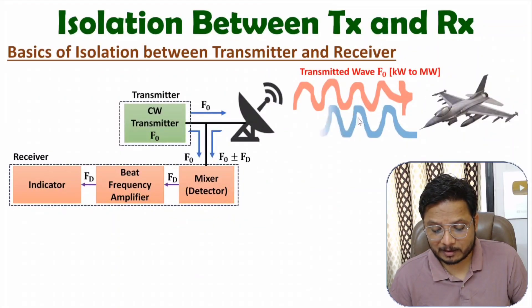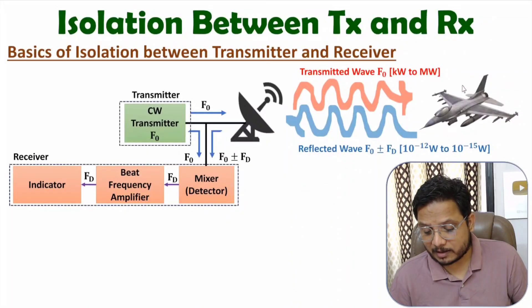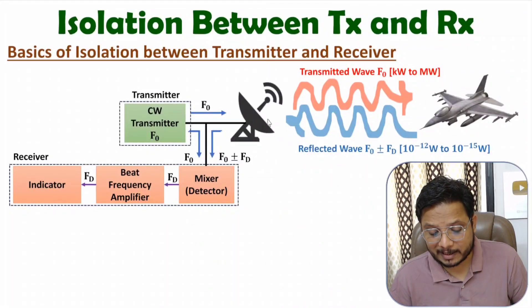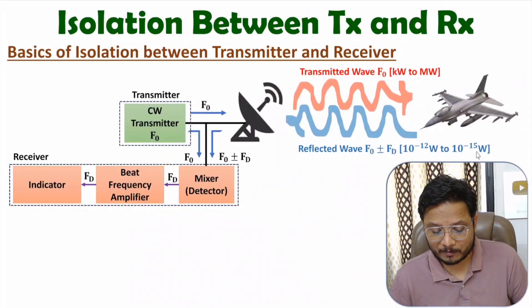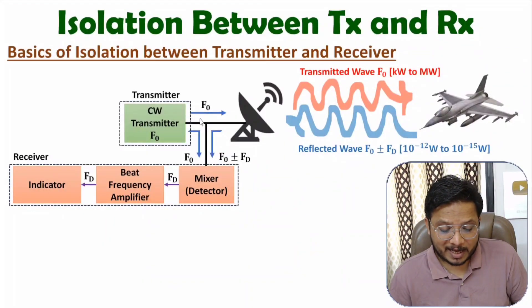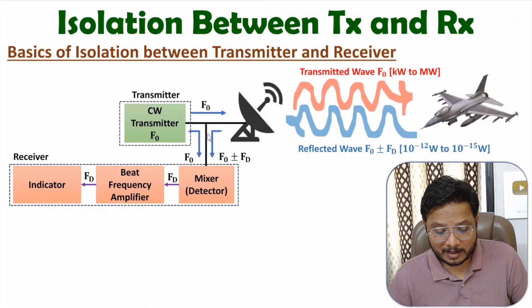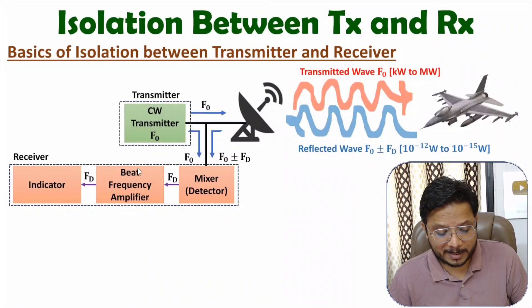The reflected echo signal has a frequency deviation if the object is in motion. Based on that motion, frequency deviation will be F0 plus or minus FD. The reflected echo signal has very low power at the antenna — in terms of 10 to the power minus 12 V to 10 to the power minus 15 V. Since we are not having any isolation, the transmitted signal going towards the antenna can also leak towards the receiver, and this leakage signal may damage the receiver.